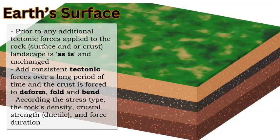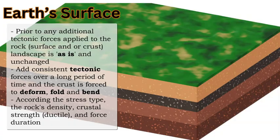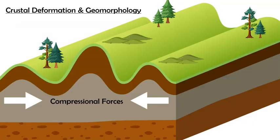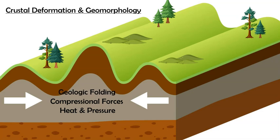Prior to any tectonic deformation, the crust — which is brittle and cold — has an original flat surface. Then, due to plate tectonics and convection currents, compressional tectonic forces push towards each other so the crust is deformed. It's no longer flat; it is now being bent, folded, and deformed.